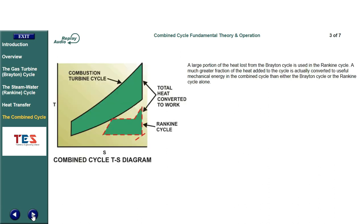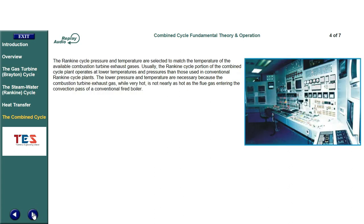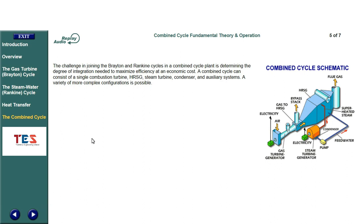A large portion of the heat lost from the Brayton cycle is used in the Rankine cycle. The Rankine cycle pressure and temperature are selected to match the temperature of the available combustion turbine exhaust gases. Usually, the Rankine cycle portion of the combined cycle plant operates at lower temperatures and pressures than those used in conventional Rankine cycle plants. The lower pressure and temperature are necessary because the combustion turbine exhaust gas, while very hot, is not nearly as hot as the flue gas entering the convection pass of a conventional fired boiler. The challenge is determining the degree of integration needed to maximize efficiency at an economic cost.